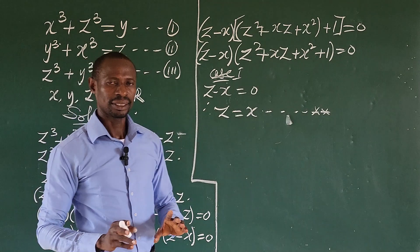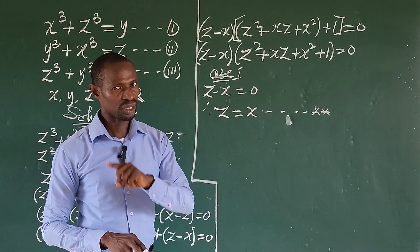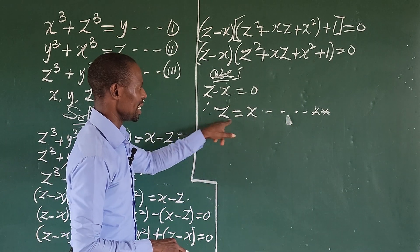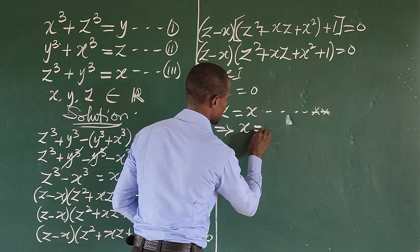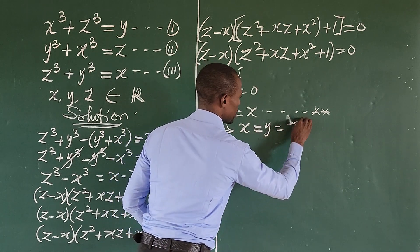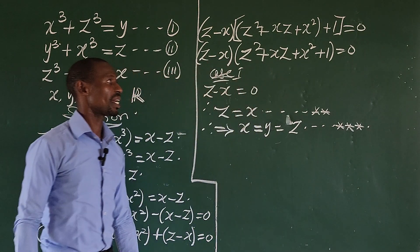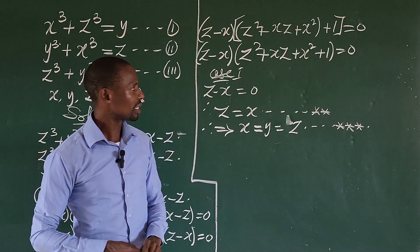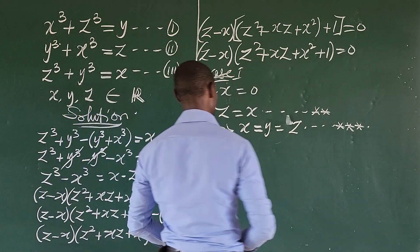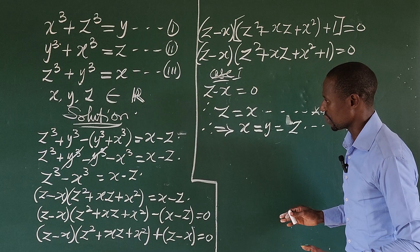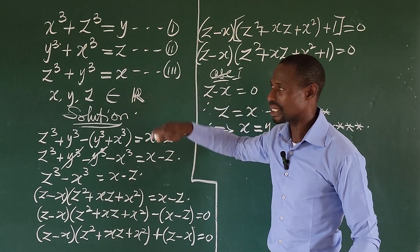Now, equation star says z = y, and equation star star says z = x. Combining these, we conclude that x = y = z. We call this equation star star star. To find the actual values, we pick one of the original equations and substitute using x = y = z.